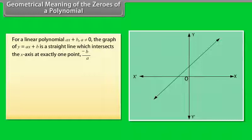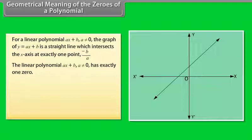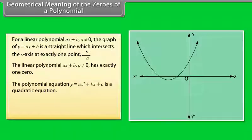at exactly one point, -b/a. Therefore, the linear polynomial ax + b (a ≠ 0) has exactly one zero. The polynomial equation y = ax² + bx